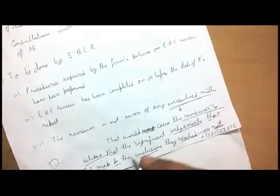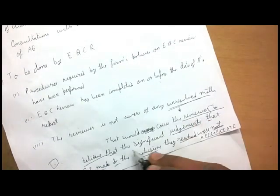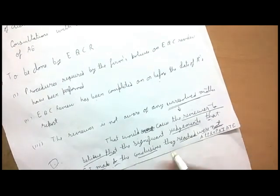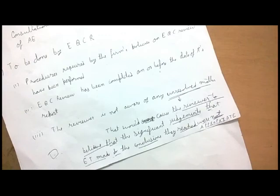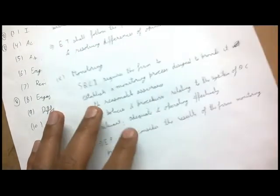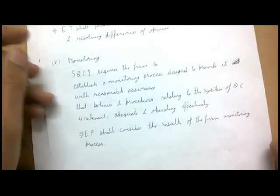To summarize: the reviewer documents that he is not aware of any unresolved matter that would cause the reviewer to believe that the judgments and conclusions reached by the engagement team were not appropriate. This concludes the video on SA 220. The next video will likely cover SA 240 or SA 250.